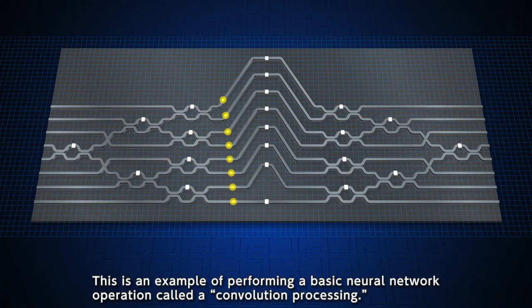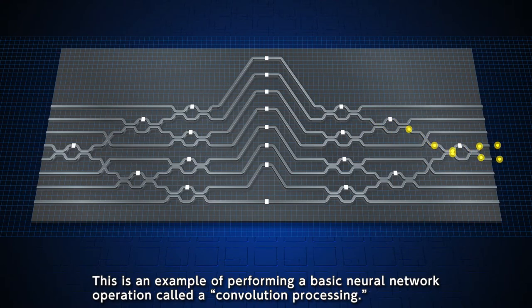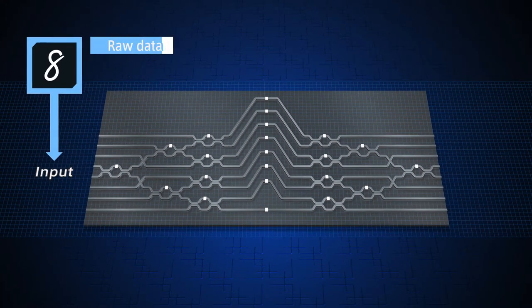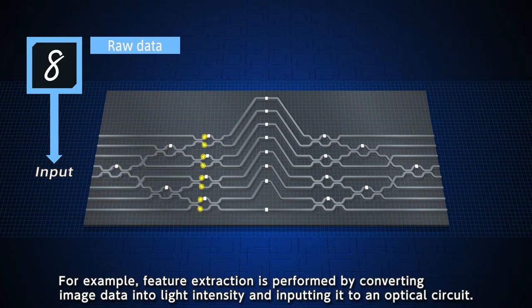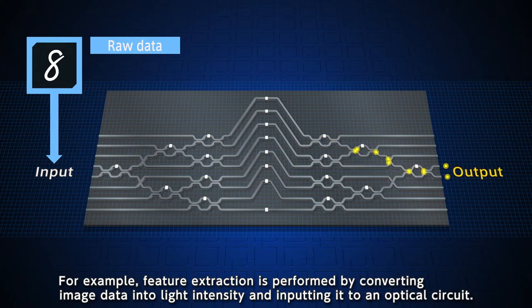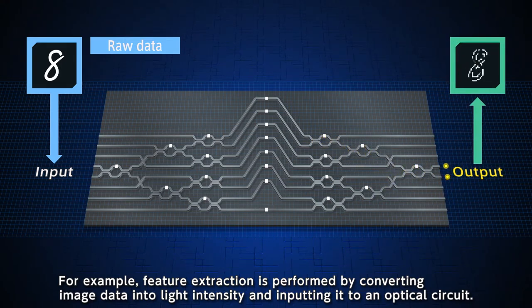This is an example of performing a basic neural network operation called convolution processing. For example, feature extraction is performed by converting image data into light intensity and inputting it to an optical circuit.